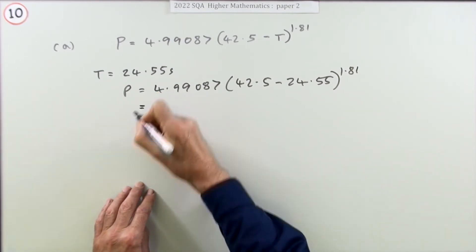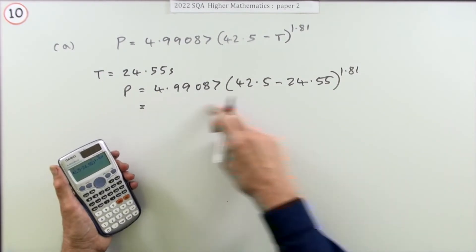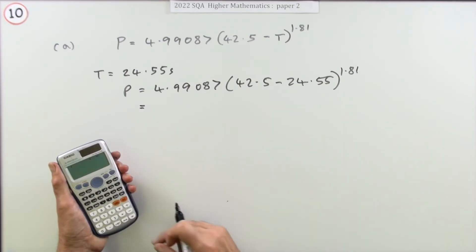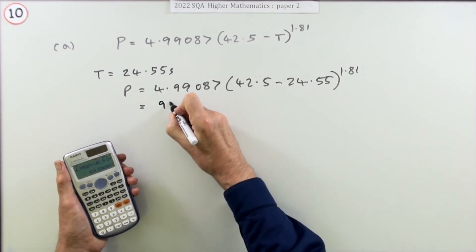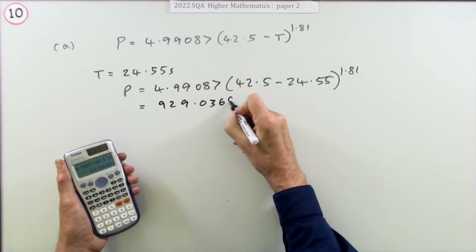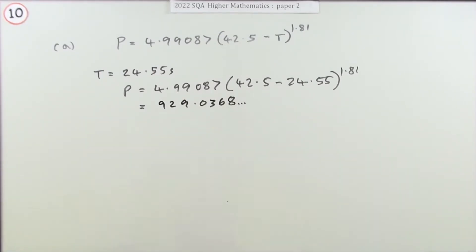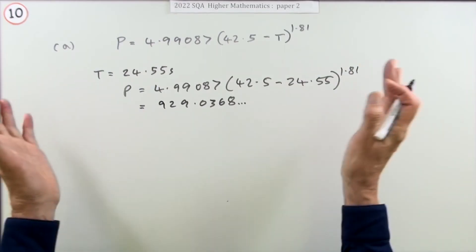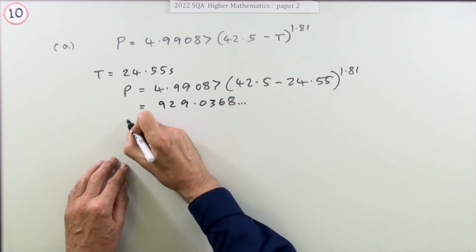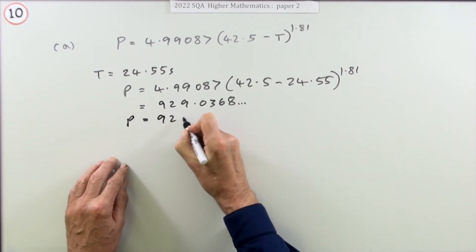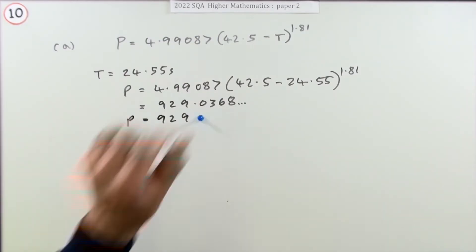Typing it all in carefully, pressing the button, you get 929.0368 and so on. However, the points that are awarded are whole numbers, so that means the points must be 929 for that mark.